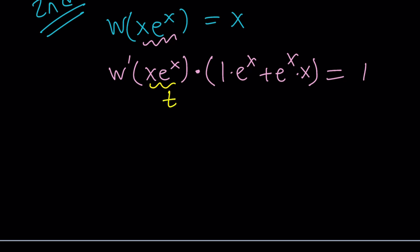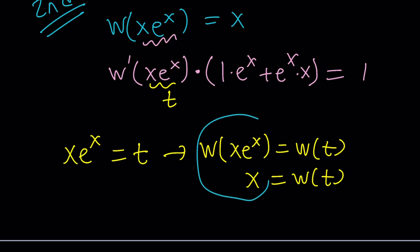We're going to call this expression t, because I want to get the derivative of the function, and inside, I don't really want anything composed with another function. I want W prime of something, a single variable. And so I want to switch to t here. Be careful. So we're setting x e to the x equal to t. And this has some implications. If you W both sides, W of x e to the x is going to be W of t. From here, x is going to equal W of t. Because by definition, Lambert's W of x e to the x is equal to x. By definition, that's, hopefully, you already know that.